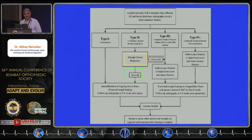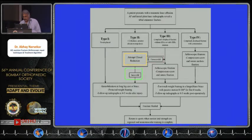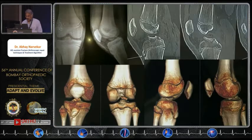Various fixation choices are available: a compression screw or a suture-type pull-out stitch. For Type 4 comminuted fractures, a pull-out stitch is more likely required than a compression screw. The overall goal after fixation is to allow early mobilization to prevent stiffness. Once the fracture heals, the patient can return to sports.